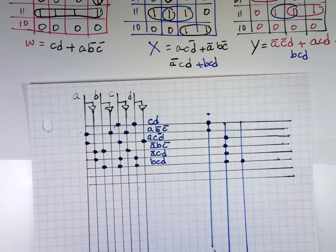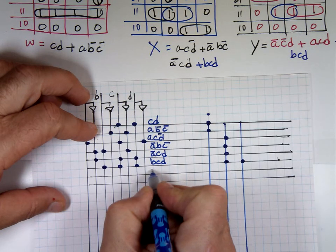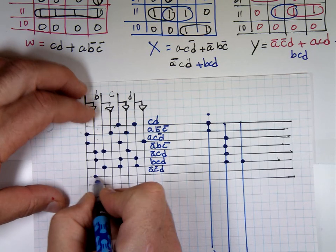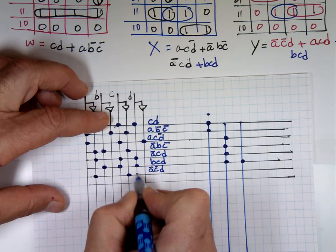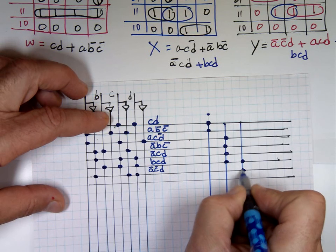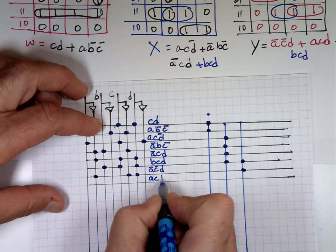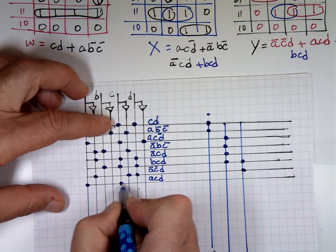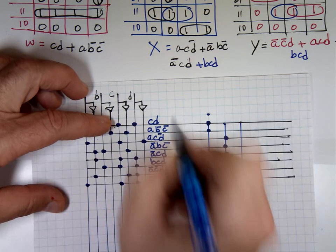I need two more for Y. For Y: ĀC̄D — attach Ā, C̄, D. And the last one is ACD — attach A, C, D. And that's my design using the PLA.